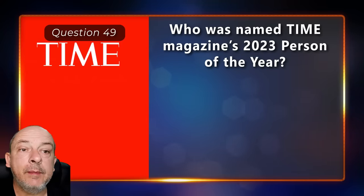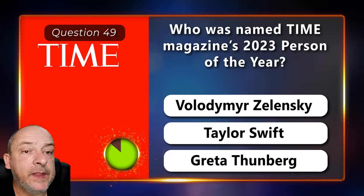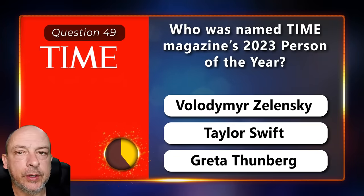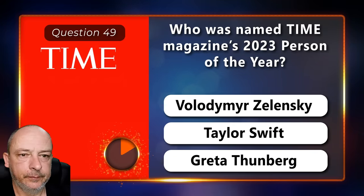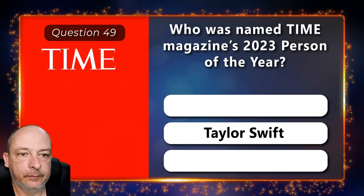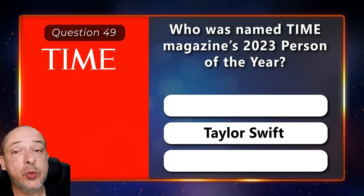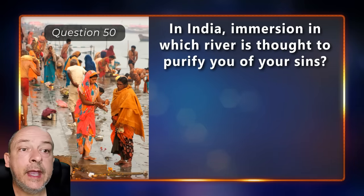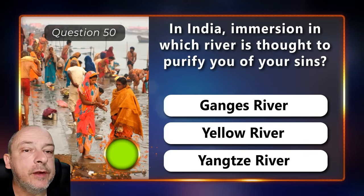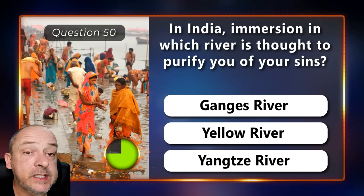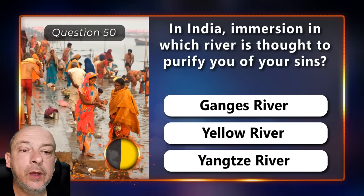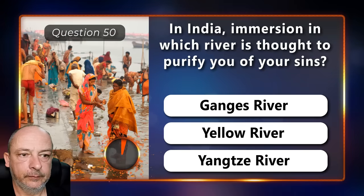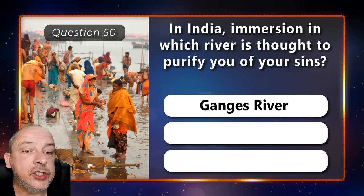Who was named Time Magazine's 2023 Person of the Year — Vladimir Zelensky, Taylor Swift, or Greta Thunberg? Taylor Swift. And in India, immersion in which river is thought to purify you of your sins — the Ganges, Yellow, or the Yangtze River? The Ganges River.